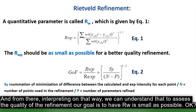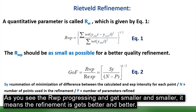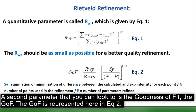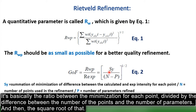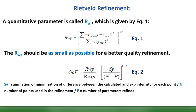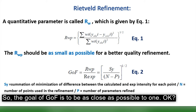To assess refinement quality, our goal is to have the Rwp as small as possible — as Rwp gets smaller, the refinement gets better. A second parameter is the goodness of fit (GOF), which is the ratio of the minimization summation for each point divided by the difference between the number of points and the number of parameters, with the square root taken. The goal for the goodness of fit is to be as close as possible to 1.